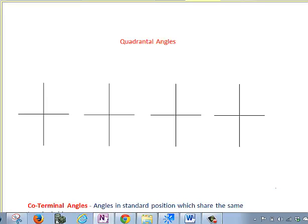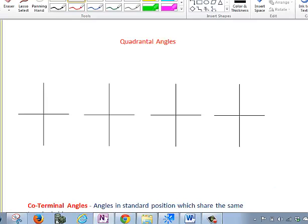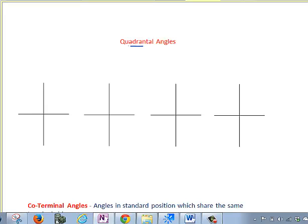The next item to discuss is this term called quadrantal angle. The word quadrantal comes from the idea of quadrant lines. There are certain angles that are quadrantal, and those are ones whose terminal side lands on a quadrant line.